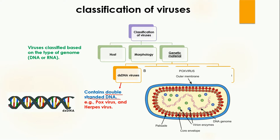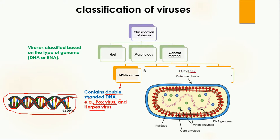Double-stranded DNA viruses contain double-stranded DNA — two strands of DNA. Any virus which contains double-stranded DNA is known as a double-stranded DNA virus. Examples include pox virus and herpes virus. Here you can see the pox virus, and inside it you can see the double-stranded DNA.